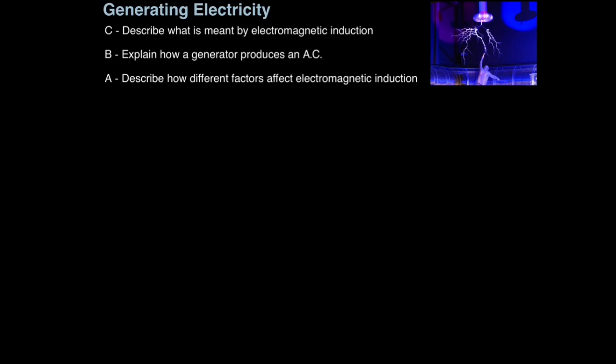In today's tutorial we're going to look at how we generate electricity. The first aim is to describe what is meant by electromagnetic induction, then explain how a generator produces an alternating current, and finally describe how different factors affect electromagnetic induction.